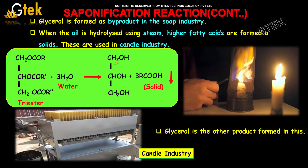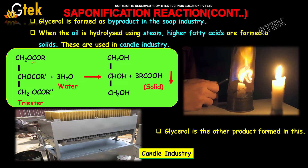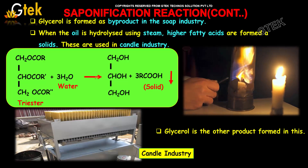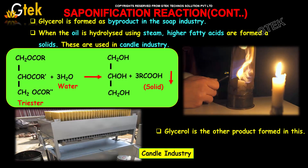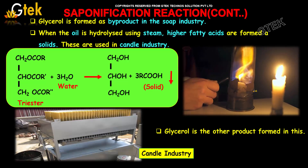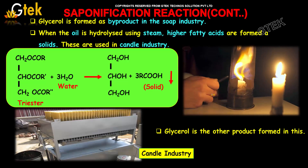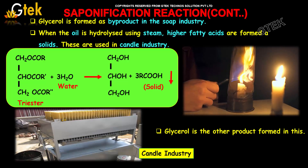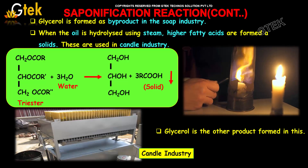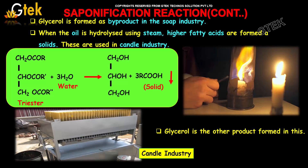Glycerol is formed as a byproduct in the soap industry. When oil is hydrolyzed using steam, higher fatty acids are formed as solids, and they are generally used in candle industries as shown here. Glycerol is the other product formed in this reaction.